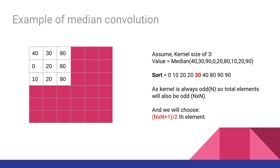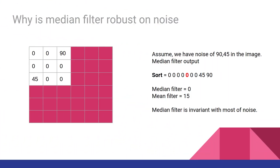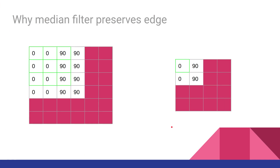Let's see why the median filter is robust. Assume we have two noisy pixels with values 45 and 90. If we implement a median filter, our output is 0, so we get rid of both noisy pixels. On the other hand, if we had implemented a mean filter, the average would be (45 + 90) / 9 = 15. This shows that the median filter is invariant to noise whereas the mean filter is not.